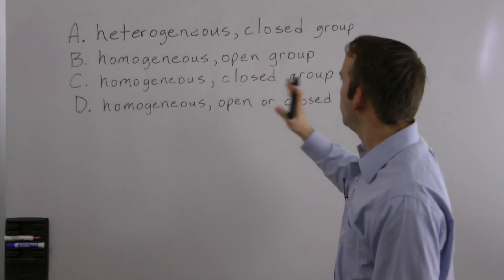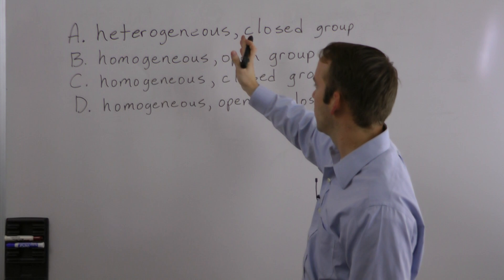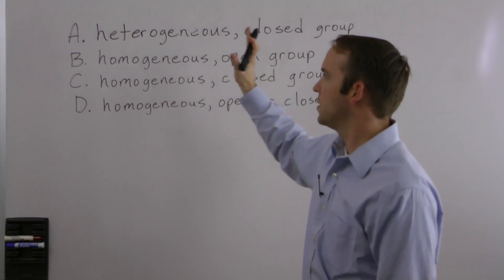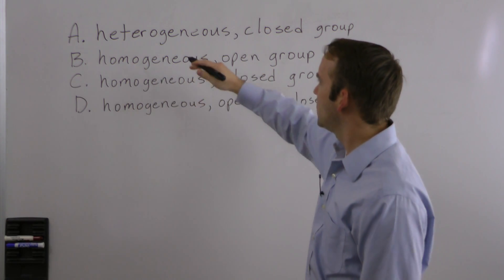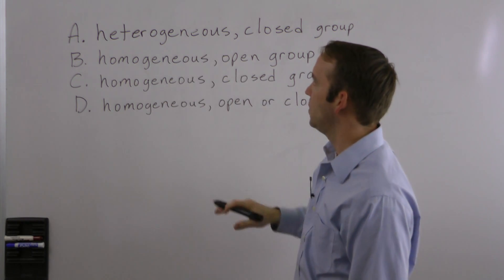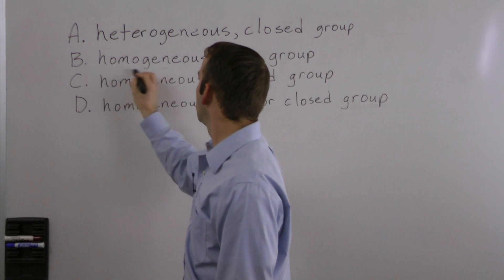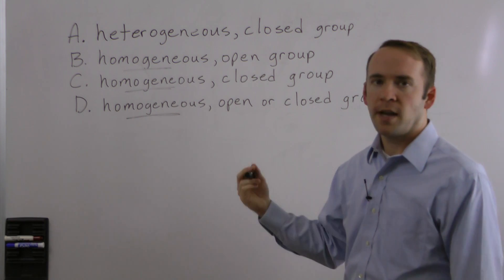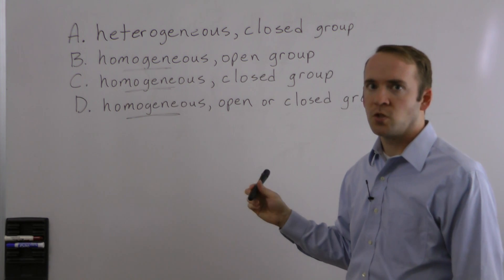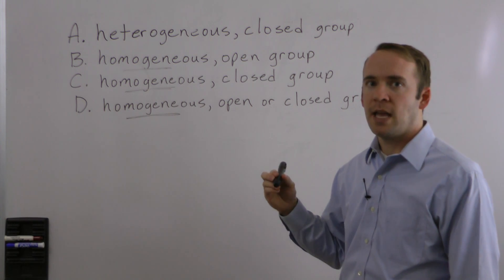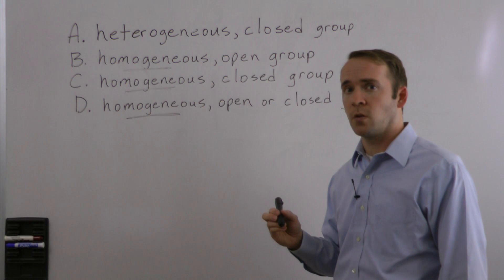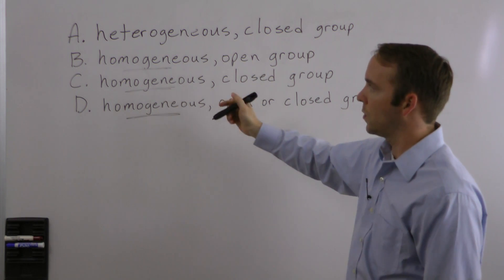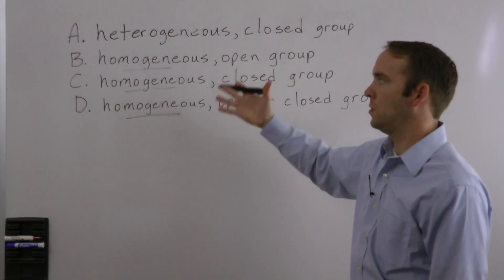We have two different things to consider: first, whether the group is homogenous or heterogeneous, and then whether it's open, closed, or in this case open or closed. Looking at the first part of the answer choices, three of them say homogenous and only one says heterogeneous. So it's likely the correct answer choice is going to be one of those three, because the test writer is trying to trick you with answer choices that are close to the correct one but not quite.